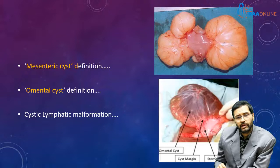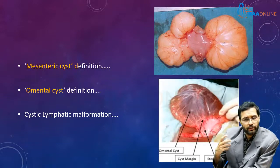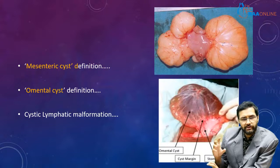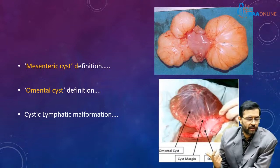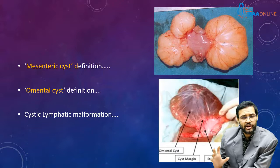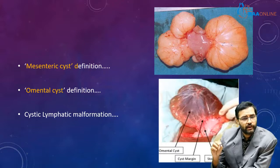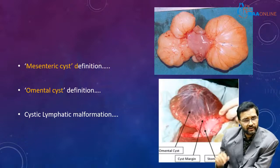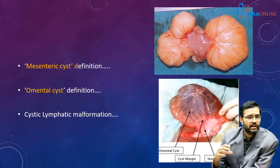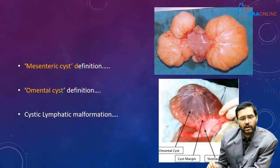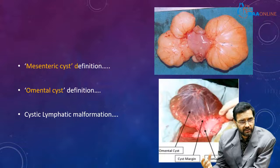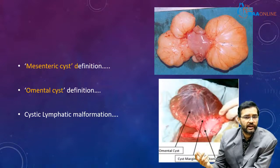Next, what constitutes a mesenteric cyst and what is an omental cyst? A mesenteric cyst, as the term itself is self-explanatory, is basically a cyst which arises from the leaves of the mesenteric line, lined by a single layer of endothelium, containing clear fluid or fluid which might have occasional calcification. An omental cyst has very similar characteristics, the only difference being that it occurs in the greater or the lesser omentum.